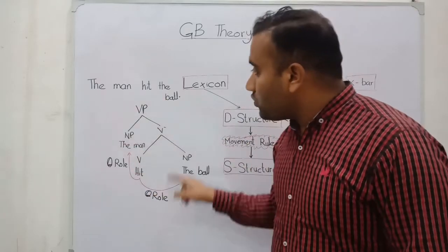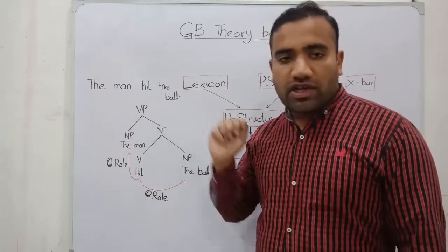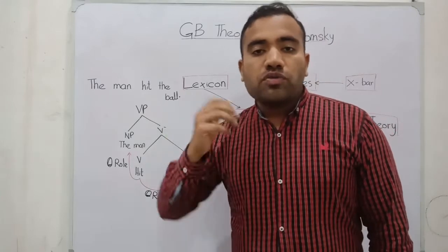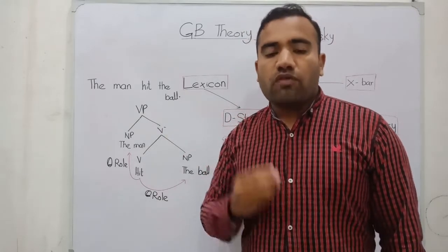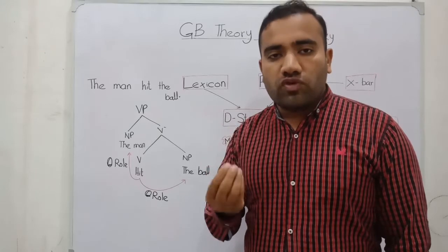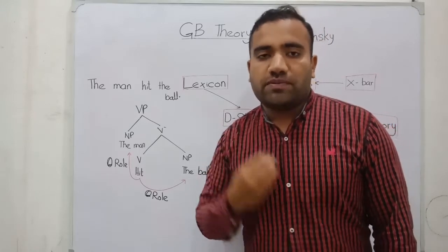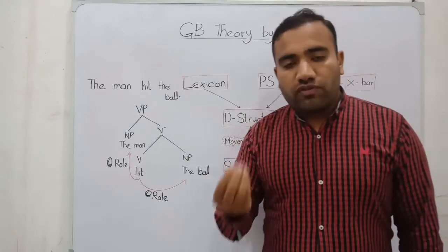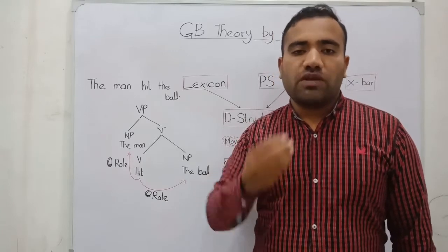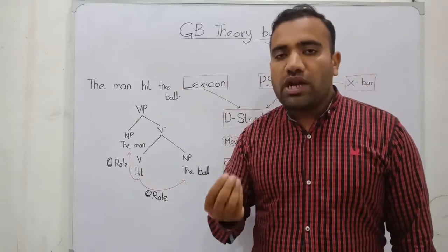If we have to construct this sentence, what should be our first requirements? Our first requirement is that we must fulfill the X-bar theory. If we fulfill our X-bar theory, then we move to the second module. What is the second module? I have told you that our second module is theta theory.